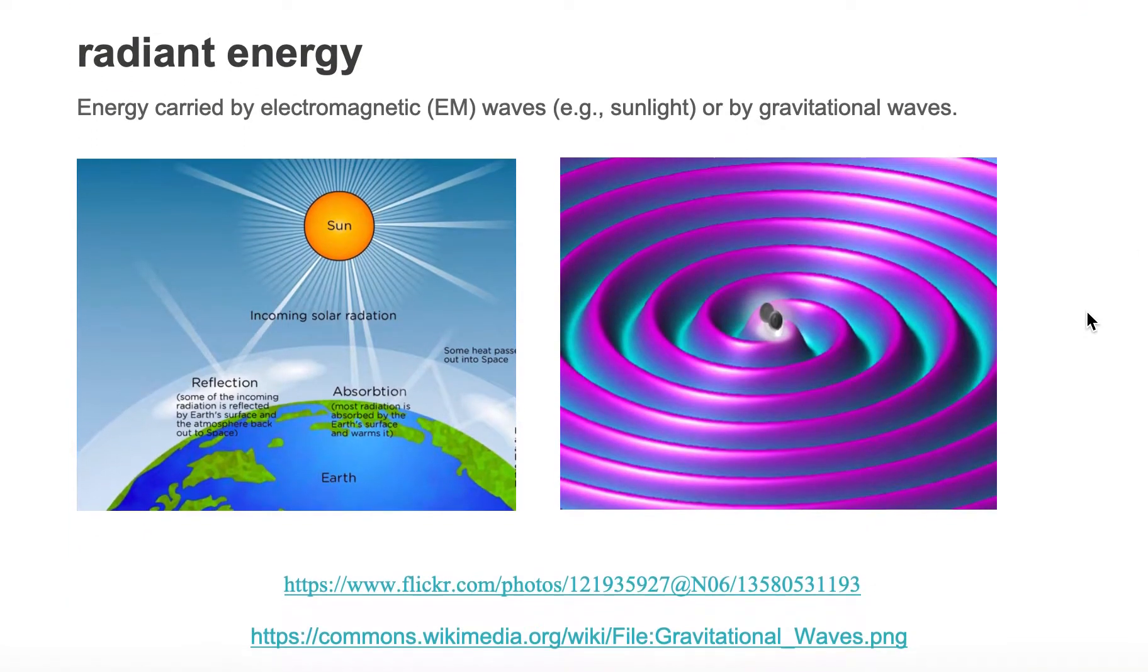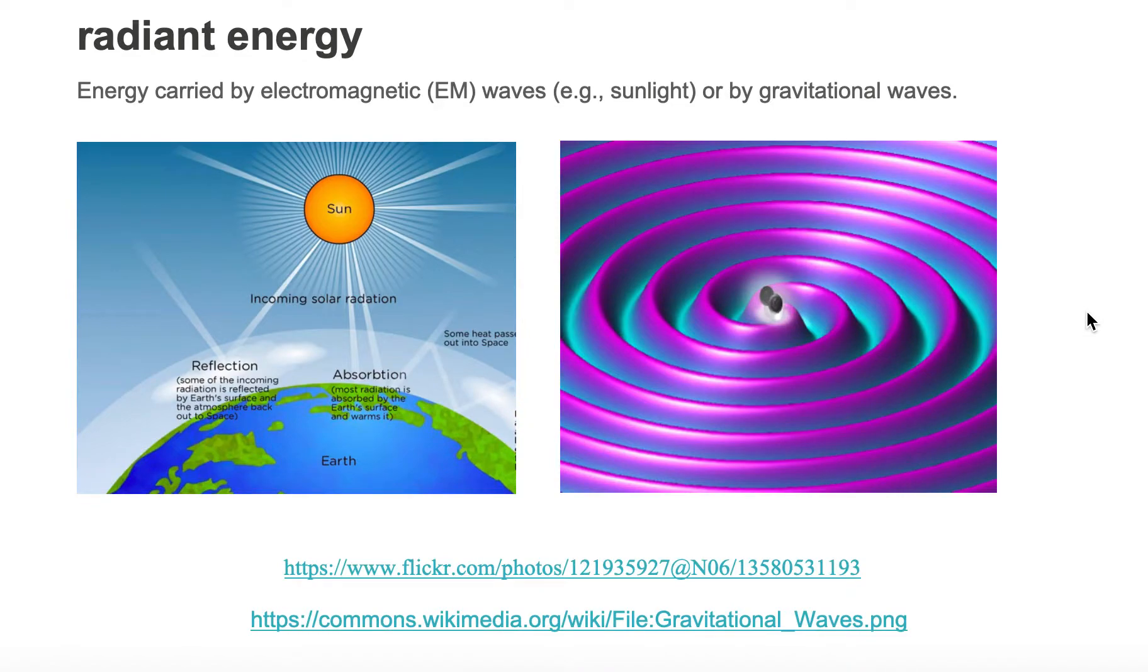On the left, we have electromagnetic waves, such as sunlight. Here we have sunlight sending out waves and hitting Earth's atmosphere. It's labeled incoming solar radiation, which is an example of radiant energy.